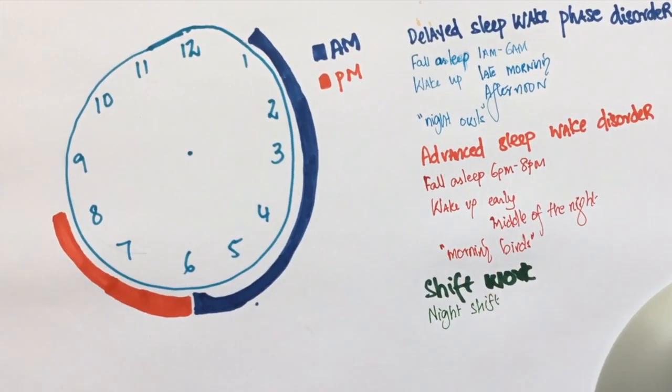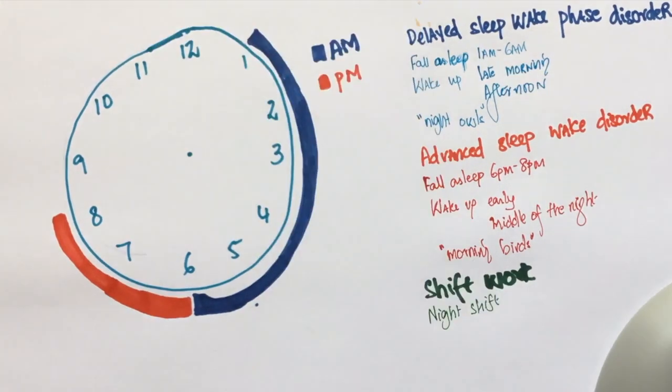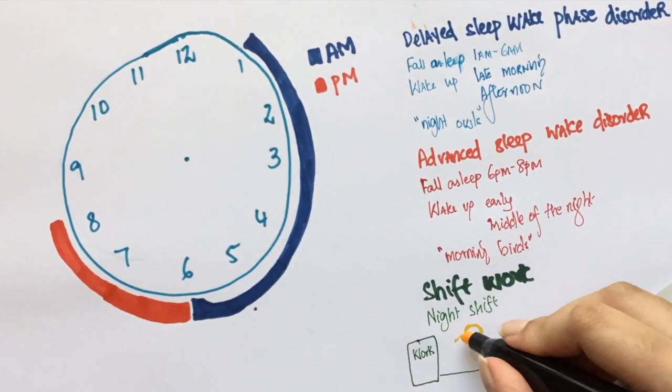Shift work disorder occurs in people who are working the night shift. These are people who feel extremely tired after work but for some reason they cannot sleep in the morning. This usually happens because while driving home from work, the sunlight prevents them from falling asleep.